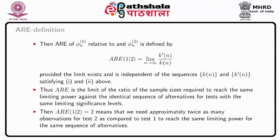Then ARE of phi_n1 relative to phi_n2 is defined as ARE of 1 relative to 2 equals the limit as n tends to infinity of k prime_n divided by k_n, provided the limit exists and is independent of the sequences k_n and k prime_n satisfying the given requirements. Thus ARE is the limit of the ratio of sample sizes required to reach the same limiting power against identical sequence of alternatives for tests with respect to the same limiting significance levels.